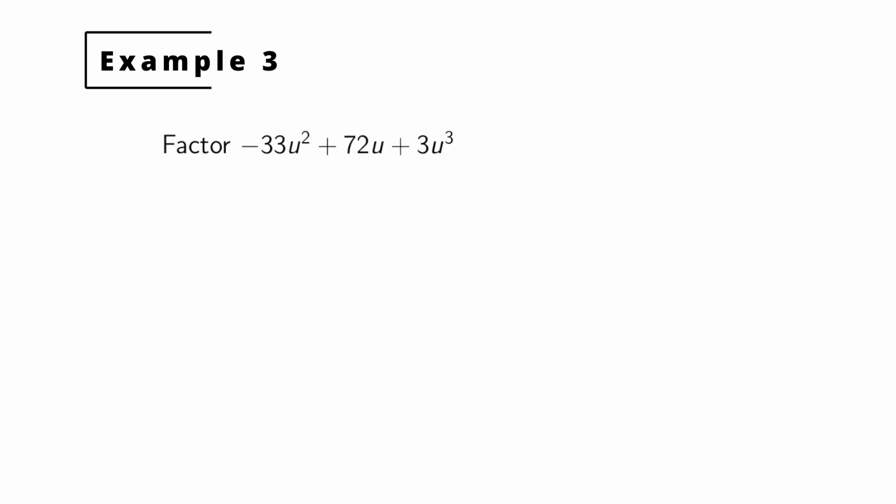Here we have our final example. The first thing we notice here is that you do have a common factor. Each term is divisible by 3 and each term also has a common factor of u. So we can factor out from each term 3u.